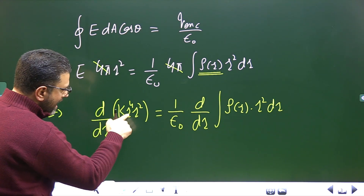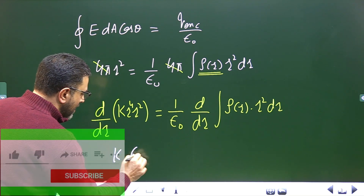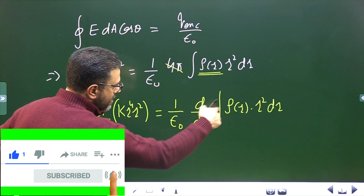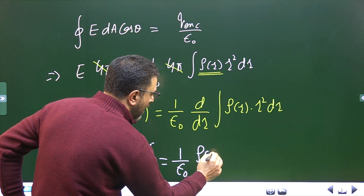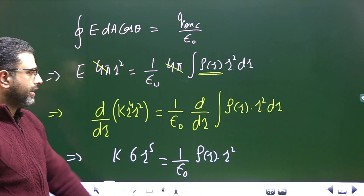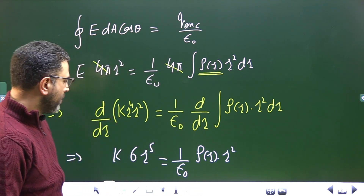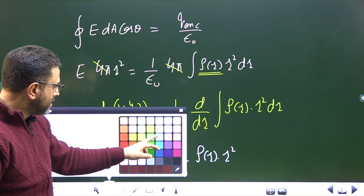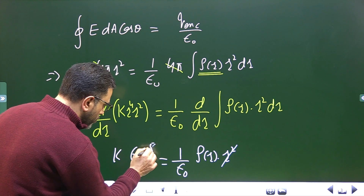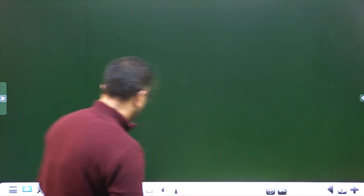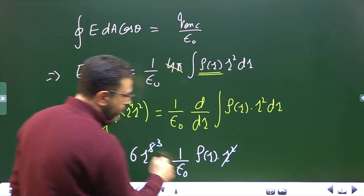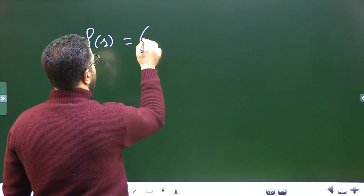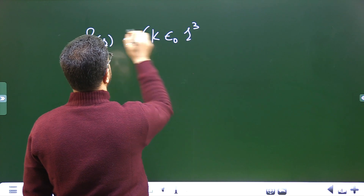So 6kr⁵ = (1/ε₀) ρ(r) · r². The r² cancels, leaving r³ on the left side after rearranging. Therefore ρ(r) = 6kε₀r³.